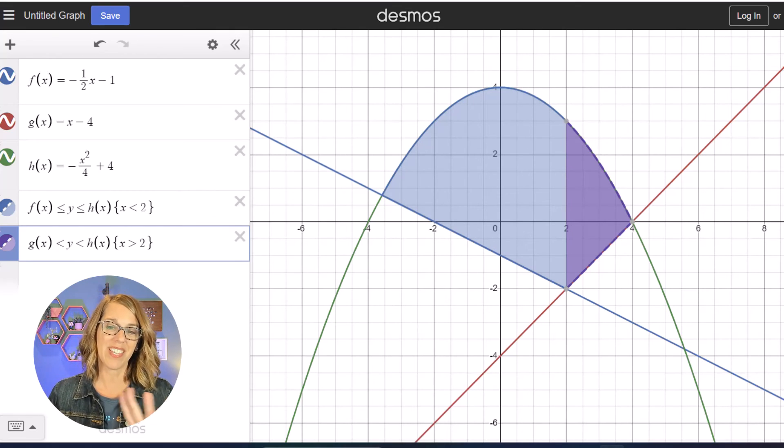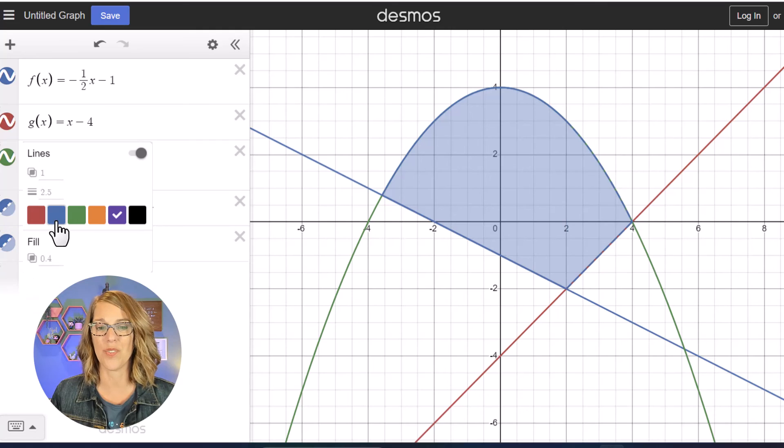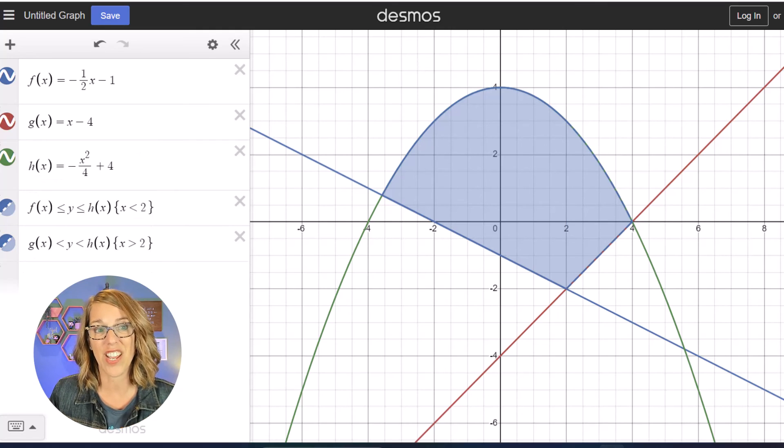I can also keep these colors the same, so if I want that shading to be the same I'm just gonna click and hold and I'm gonna change that shading to blue and I've got that shading.